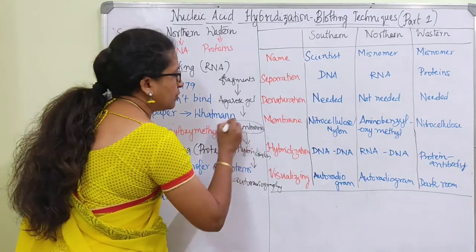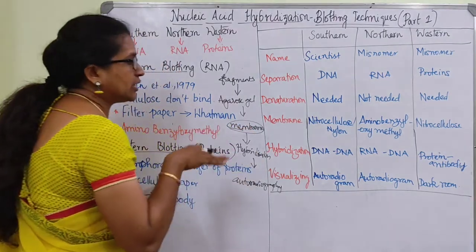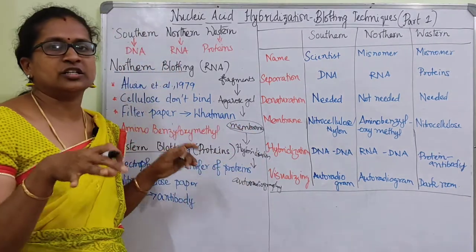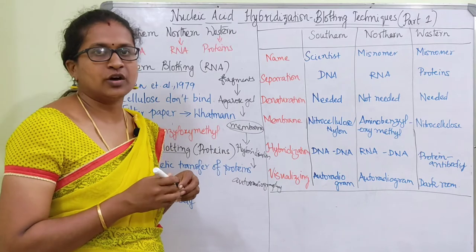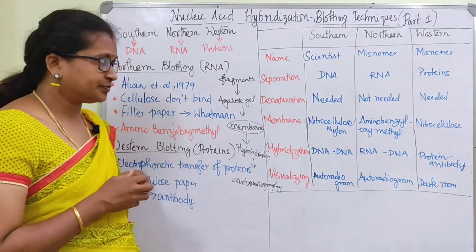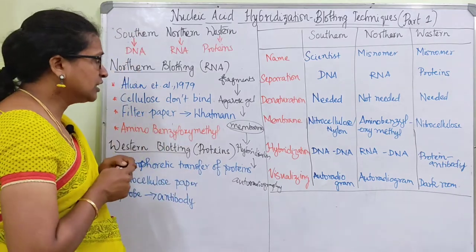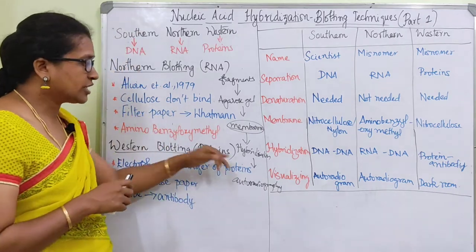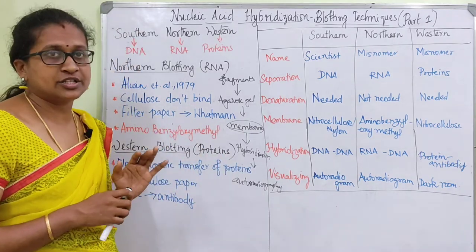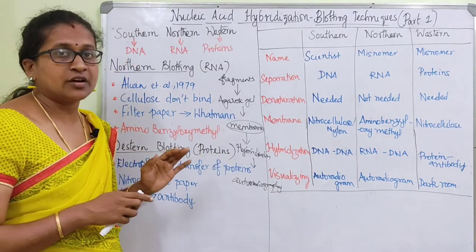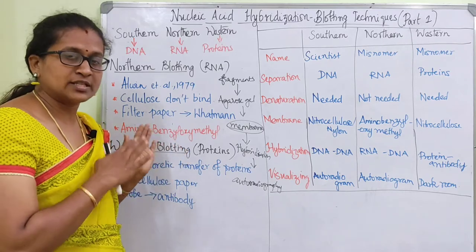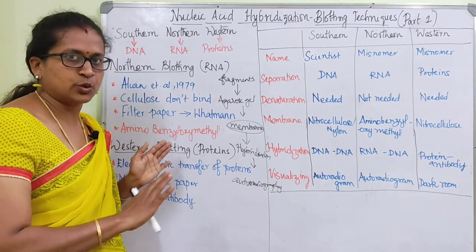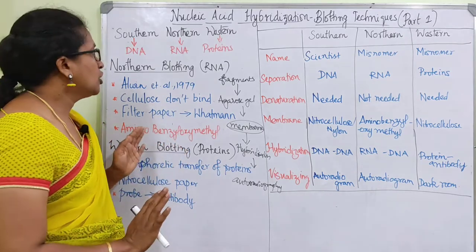The membrane is the next important thing. Next is hybridization. Hybridization for northern blotting is discussed the same way as southern blotting.